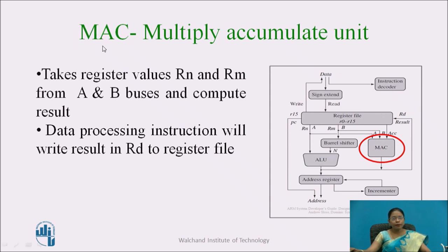MAC stands for multiply accumulate unit. This unit takes values from two registers Rn using buses A and B and computes the result. This result is available on the output bus, and the data processing instruction writes this result into the destination register Rd, back onto the register file. Rd stands for destination register. The multiply accumulate unit does the data processing, computes results, and accumulates the result into the register.